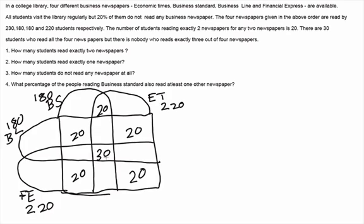Then we are given 30 students who will read all four. So this is 30, nobody who reads exactly three. These four which were left out, these were exactly three which come to be zero. Now we need to look at how many individuals are there. So 20, 20 and 20, 60 and 30, 90 is gone. 90 is gone out of 230 which means 140 remains here. Again 90 is gone out of 180, so 90 is left here.